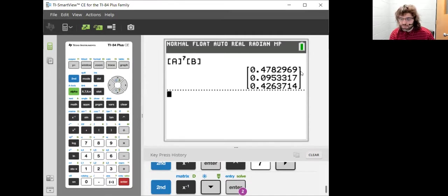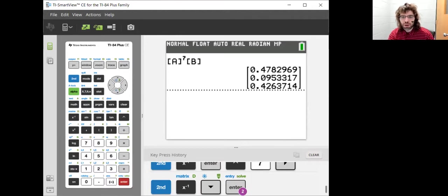And we didn't explicitly ask, but we can answer the probability that over the course of this week we got sick and then recovered is 0.4263714. The probability that we are currently sick after one week is 0.0953317.